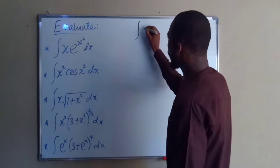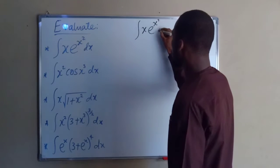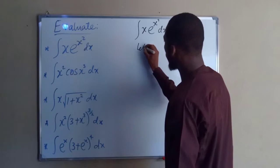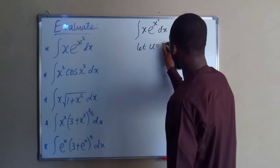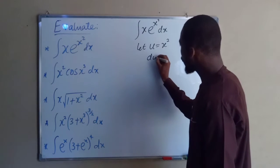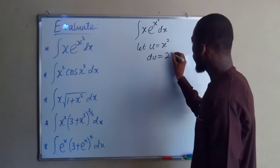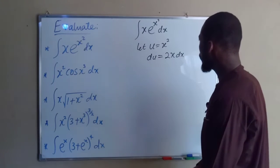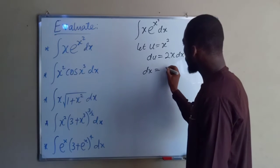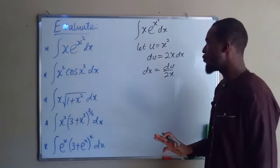The integral of x times e to the power of x squared with respect to x. Let u be equal to x squared. The derivative of u with respect to x, du, is going to be 2x dx.